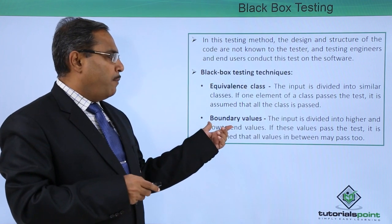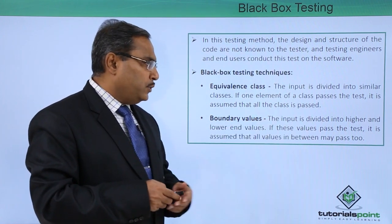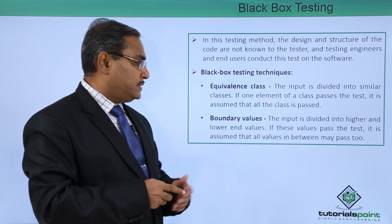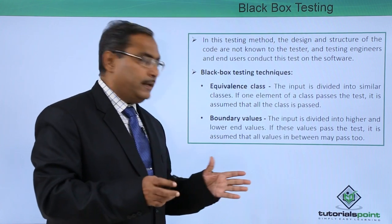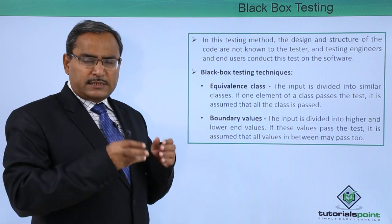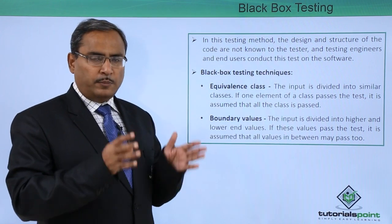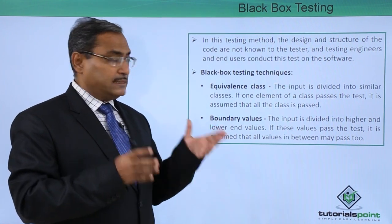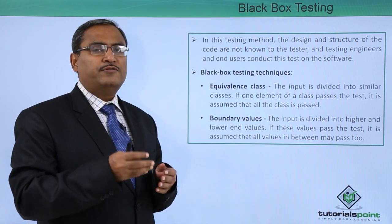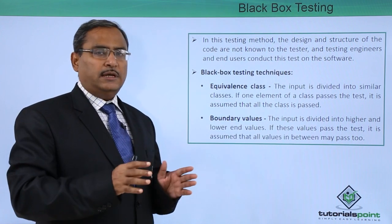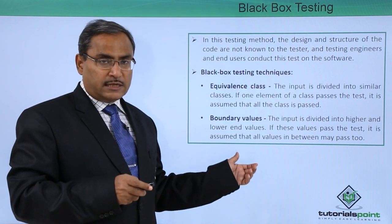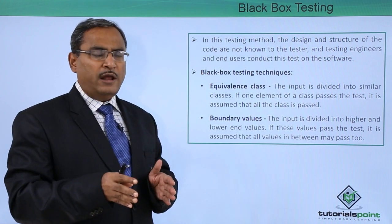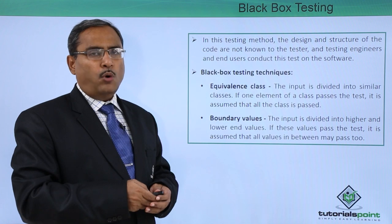The next technique is boundary value analysis. The input is divided into higher and lower end values. If these boundary values pass the test, it is assumed that all values falling in between may also pass. We consider the highest and lowest values of the input set. If the boundary values pass — meaning the output generated matches the desired output — the quality is okay and the testing has been done successfully. We can then assume that all values falling between the higher and lower limits will also be okay.